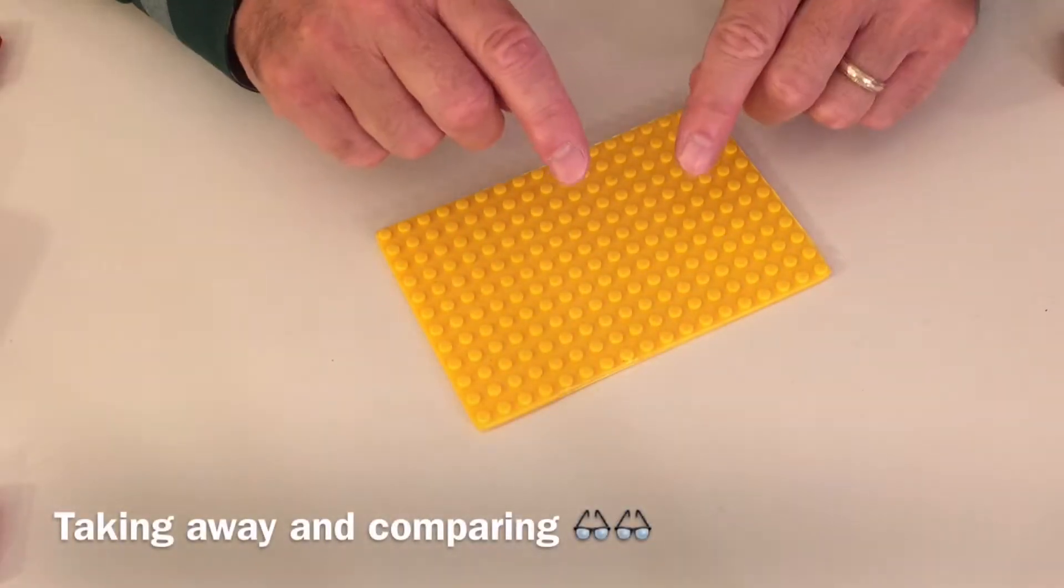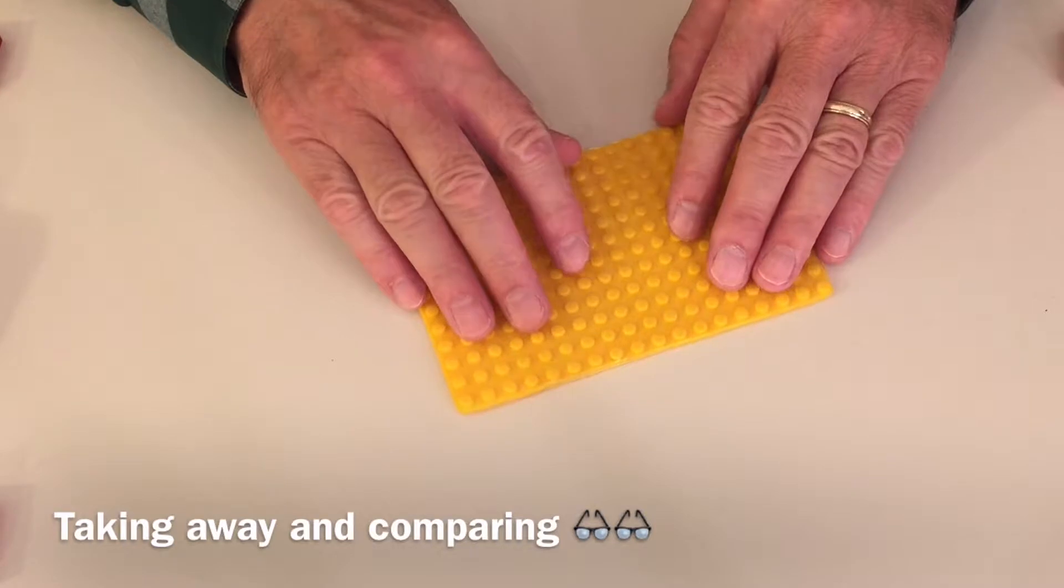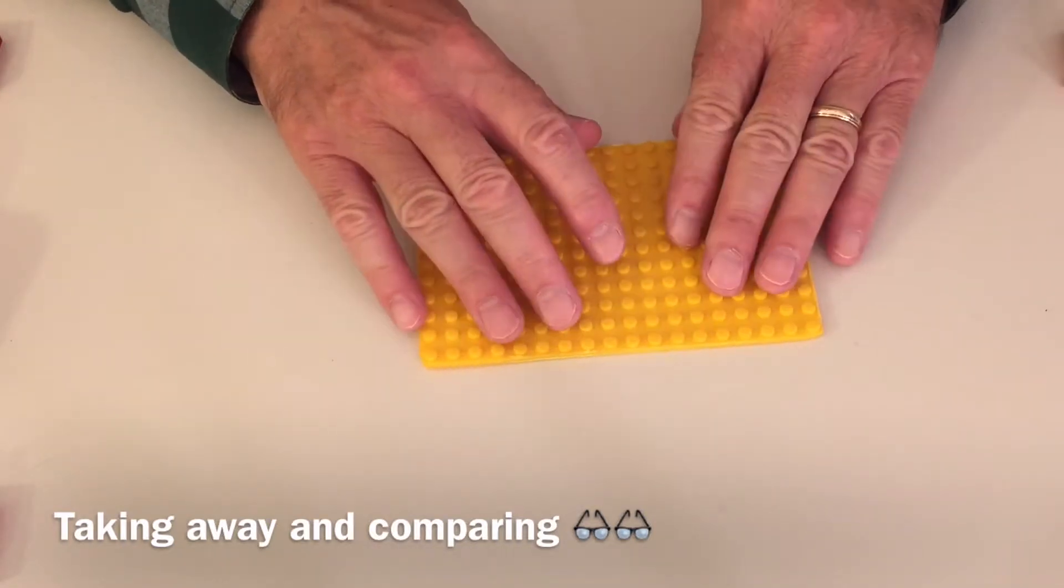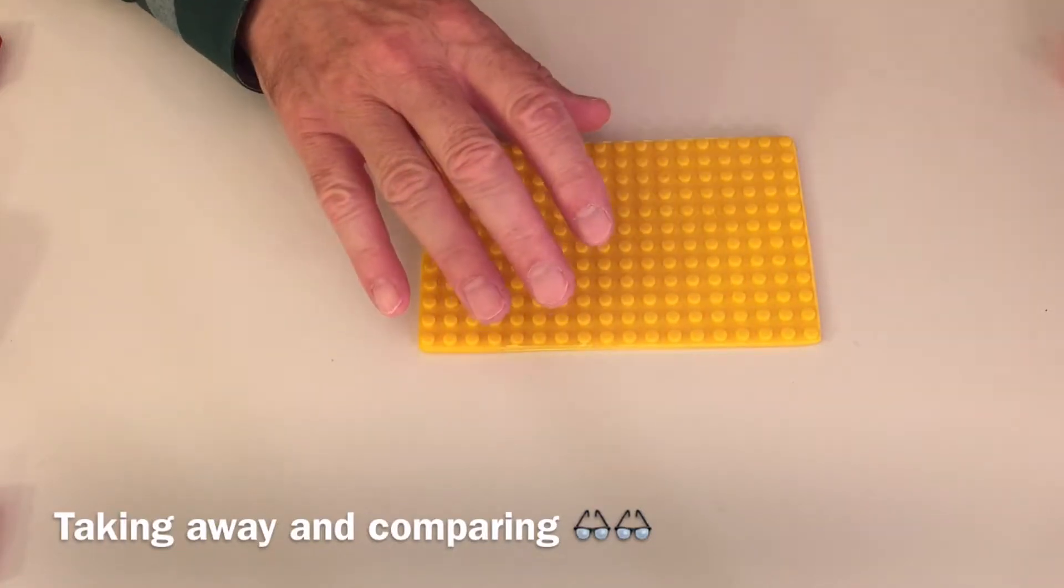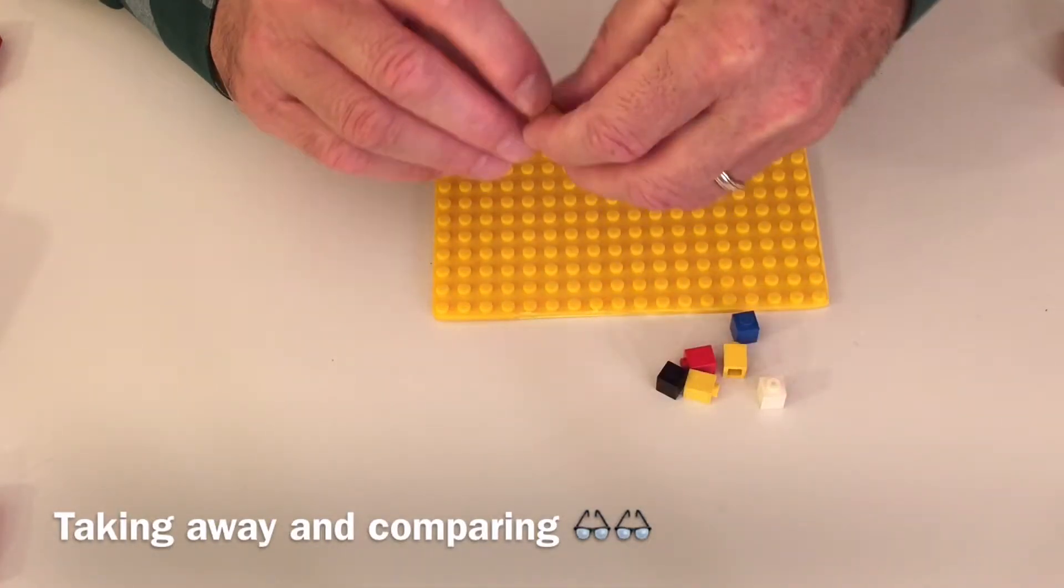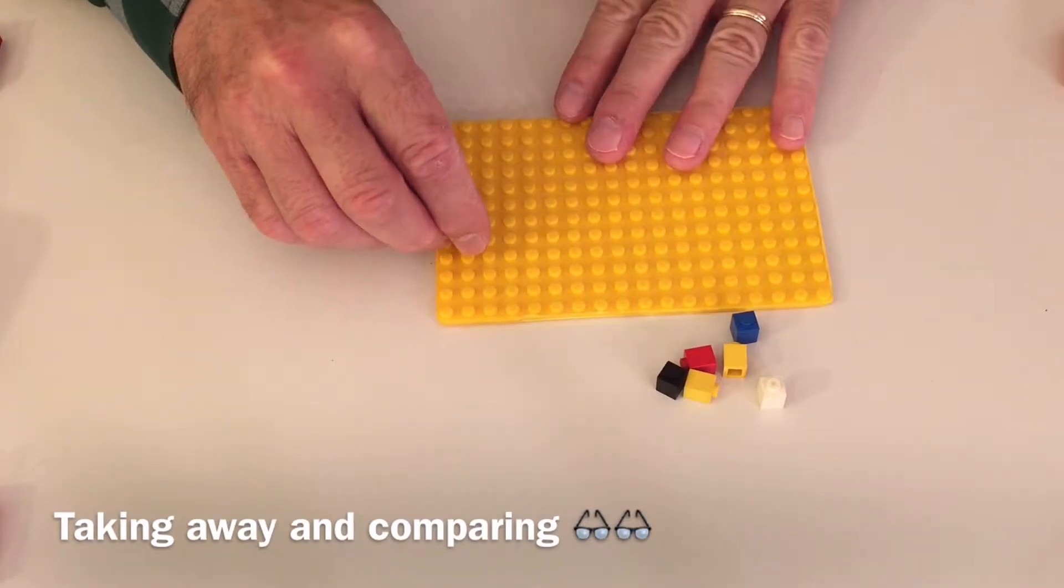Okay, exploration time is over and time for us to start subtraction activity two. We want to look at subtraction as take away and compare. So we're going to try again to do seven one dot blocks.